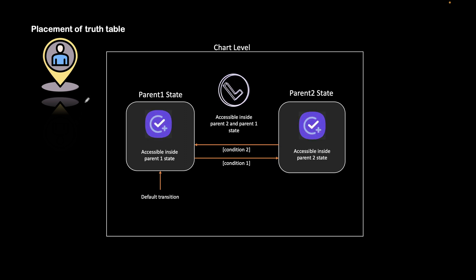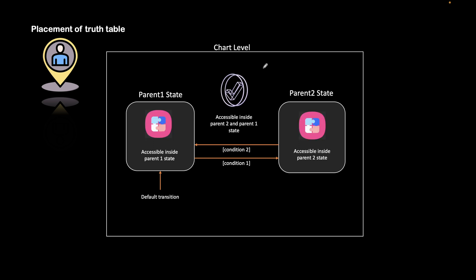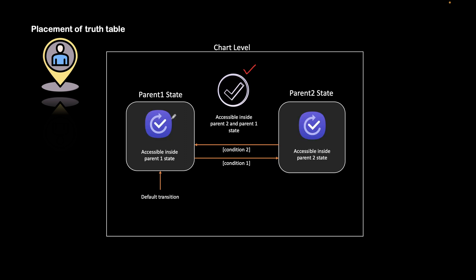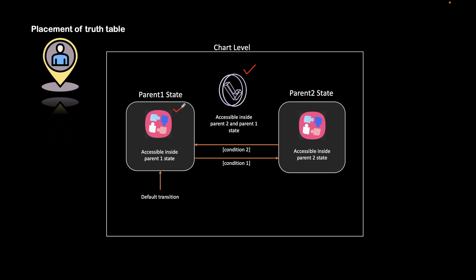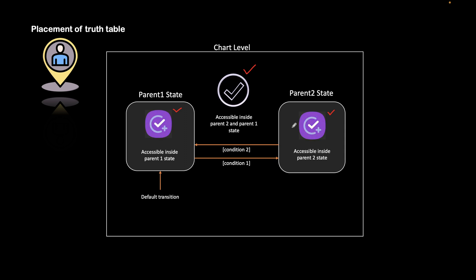Truth table placement is very important when you design anything at the chart level. As you can see, there could be three possible placements of a truth table: it could be present at the chart level, or it could be present at the state level — inside a parent state one or inside a parent state two.